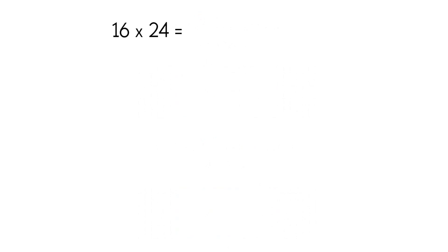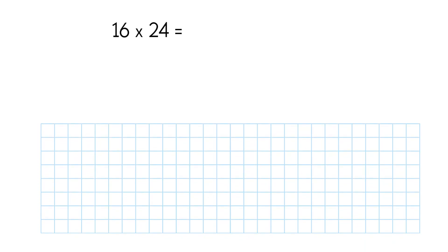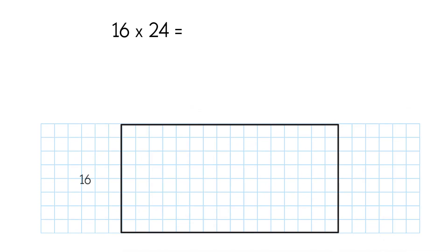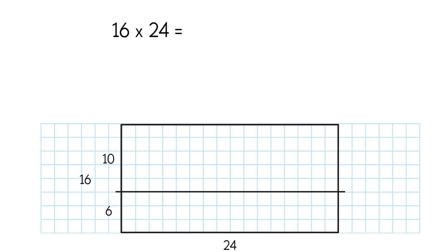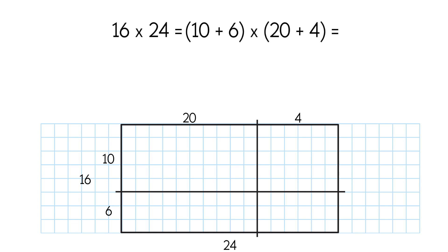Now let's take more difficult examples: 16 times 24. Both factors are two-digit whole numbers. Let's multiply them and then get back to the decimals. We start by drawing the area model — a rectangle with sides of 16 and 24. The area of this rectangle represents the product of 16 times 24. This time we're going to divide the rectangle into 4 smaller rectangles. We break up 16 into 10 and 6 using a horizontal line, and 24 into 20 and 4 using a vertical line. We rewrite 16 in expanded form as 10 plus 6, and 24 as 20 plus 4. Then we multiply using the distributive property of multiplication.